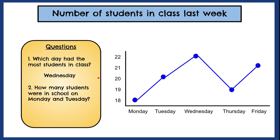Now it's your turn. Let's look at question three. How many students were in school on Monday and Tuesday? Now use the line graph to figure out the total number of students in class on Monday and on Tuesday. You can tell a friend, family member, or even a stuffed animal what you figured out. Pause the video and then come back to see if our answers match.